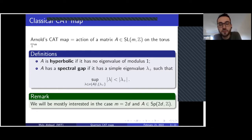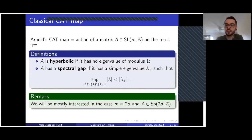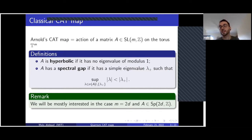For the higher dimensional work we want to do, we will also study another property called spectral gap, which is just the existence of a leading eigenvalue — a simple eigenvalue whose modulus is strictly larger than the modulus of all other eigenvalues. A priori these properties are unrelated, but notice that in dimension two they are equivalent because of the determinant one assumption.